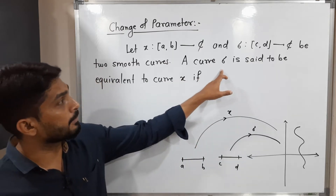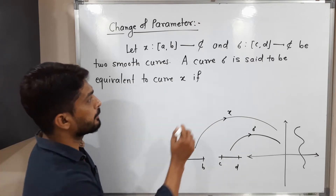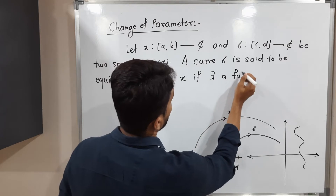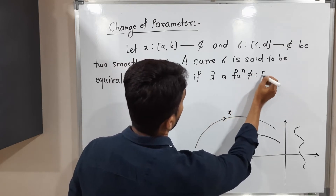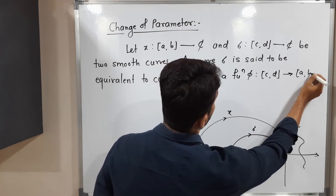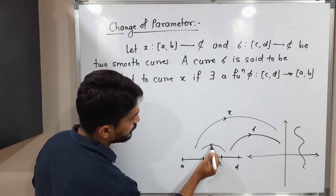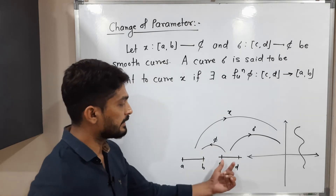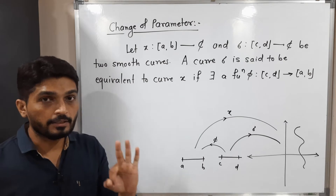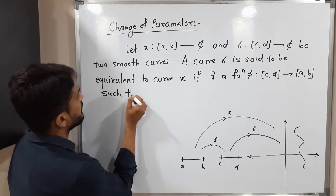A curve σ is said to be equivalent to curve χ if there exists a function φ from the closed interval [c, d] to the closed interval [a, b], which satisfies three conditions.